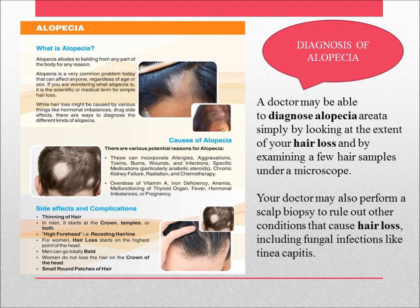Diagnosis of alopecia: a doctor may be able to diagnose alopecia areata simply by looking at the extent of hair loss and by examining a few hair samples under a microscope. The doctor may also perform a scalp biopsy to rule out other conditions that cause hair loss, including fungal infections like tinea capitis.